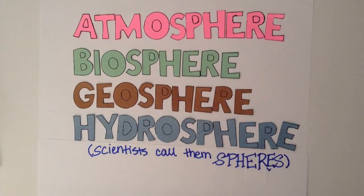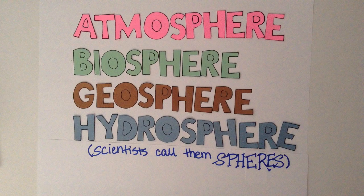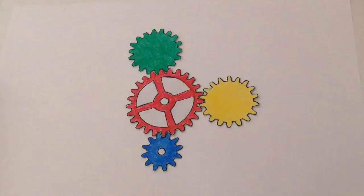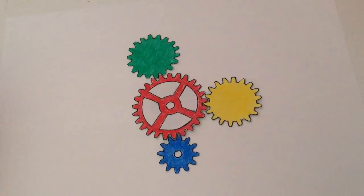These are the four parts of the Earth's system. Scientists call them spheres. Then, how is Earth a system? Think back again to the gears. The gears are parts that interact and affect each other.